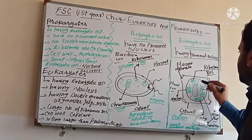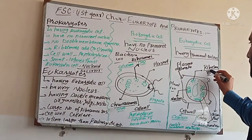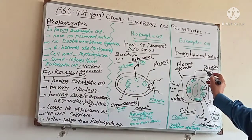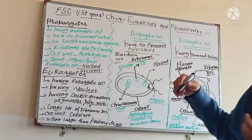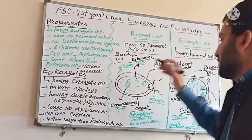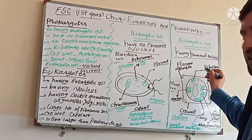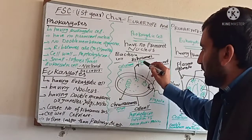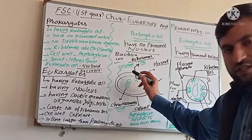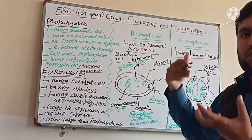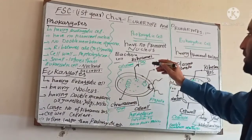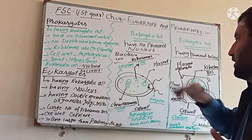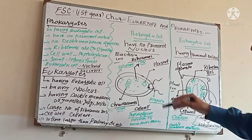The third difference is ribosomes. In the Eukaryotic cell, ribosomes are large in size — 80S. In the Prokaryotic cell, ribosomes are about 70S, meaning they are smaller. So this is the third difference.